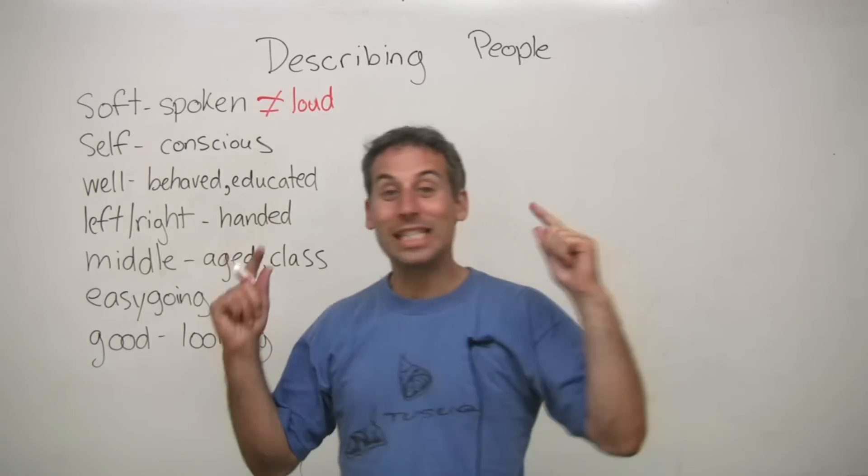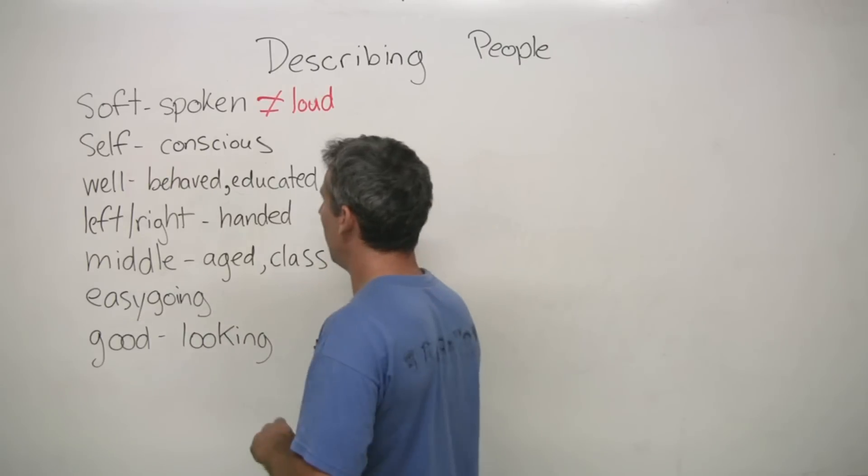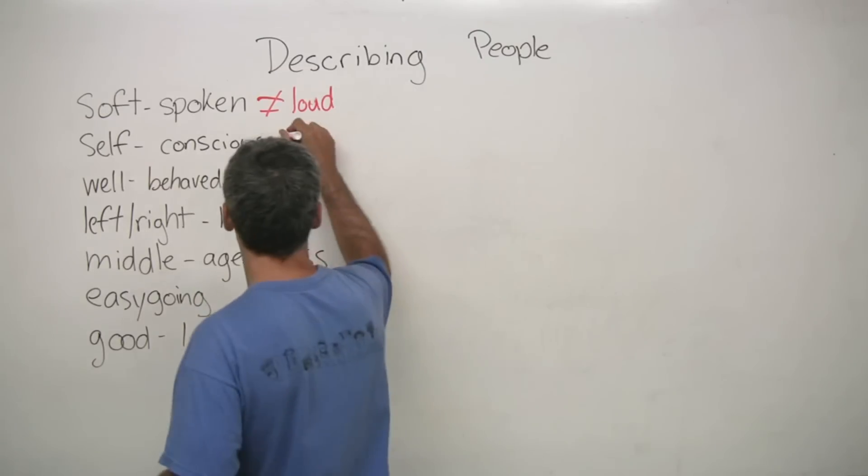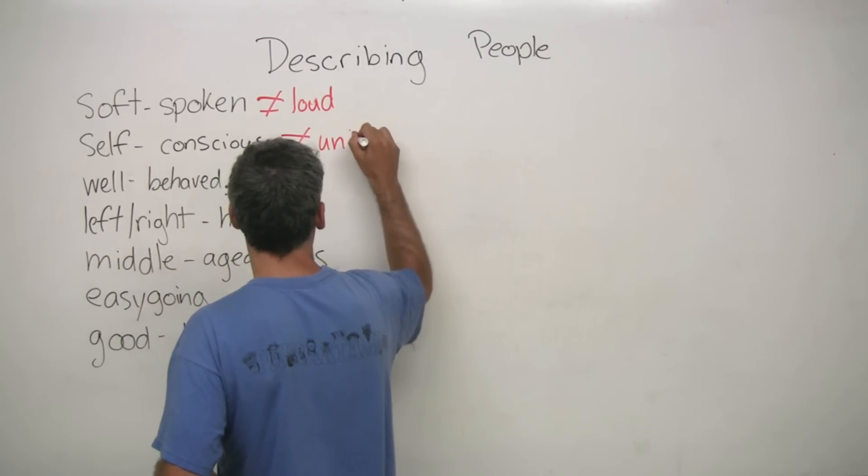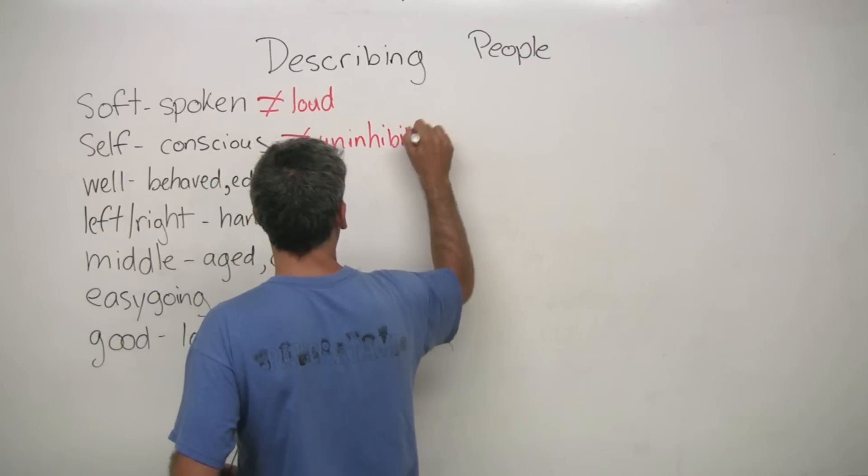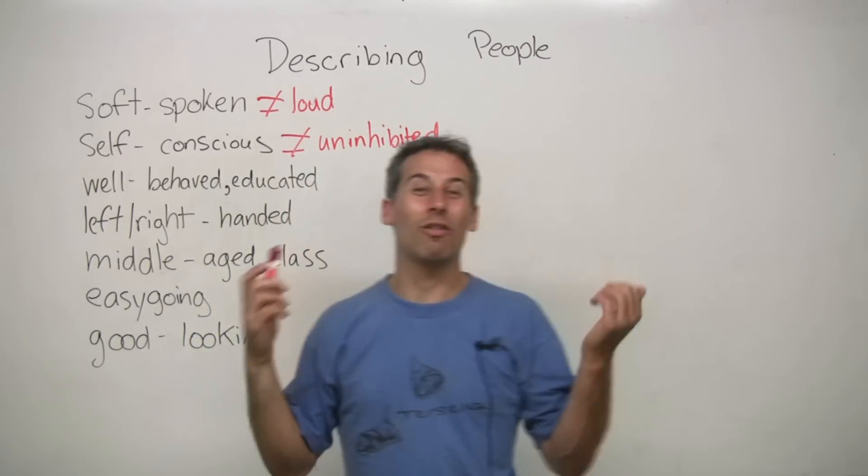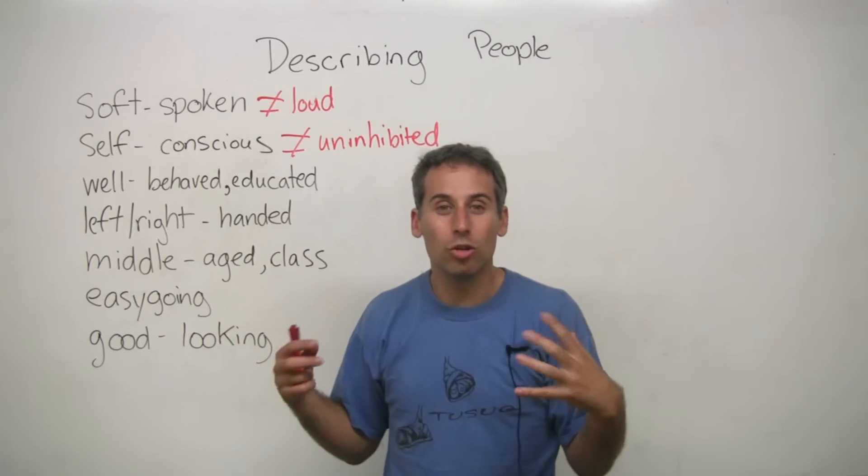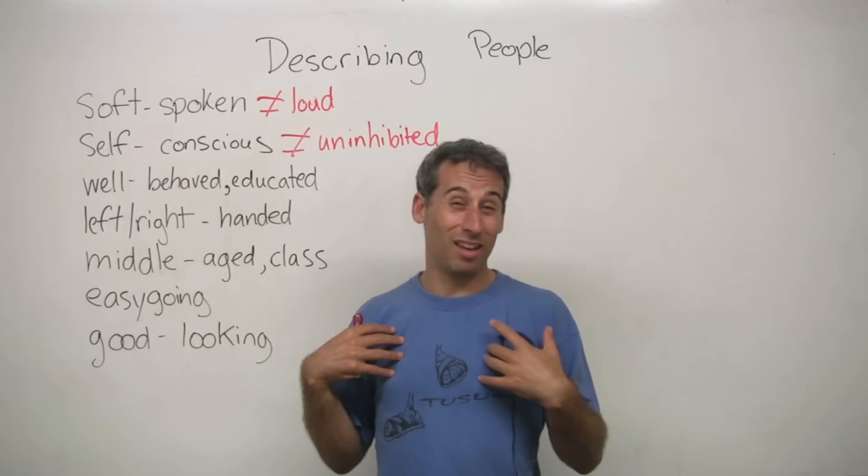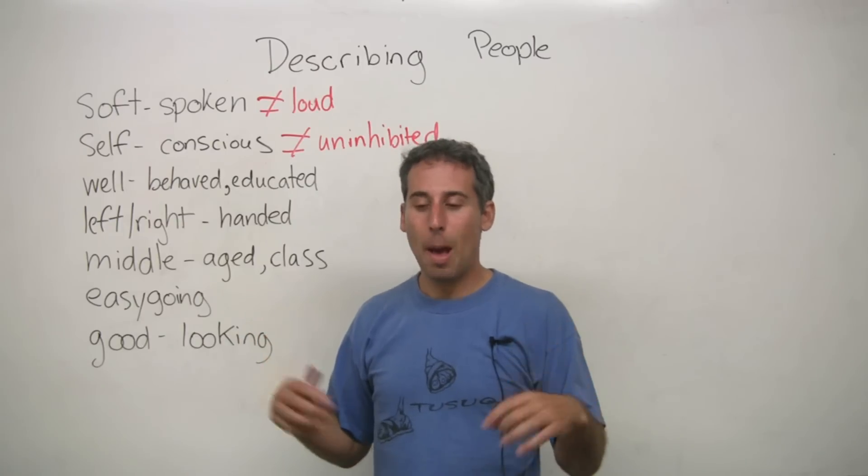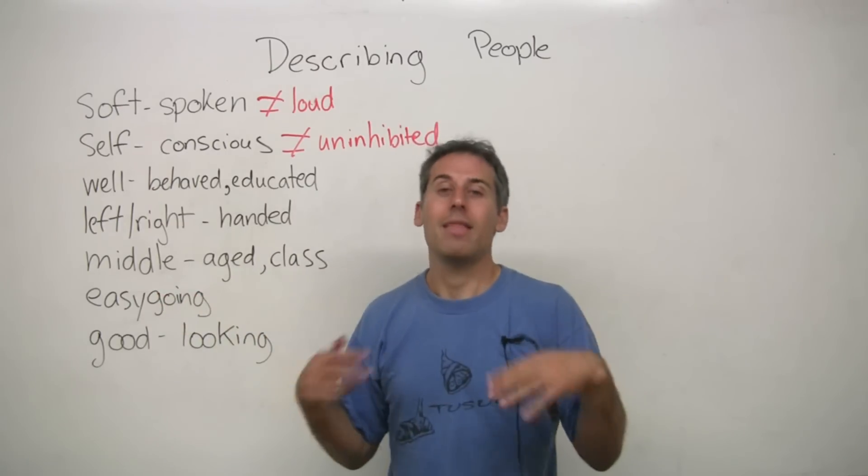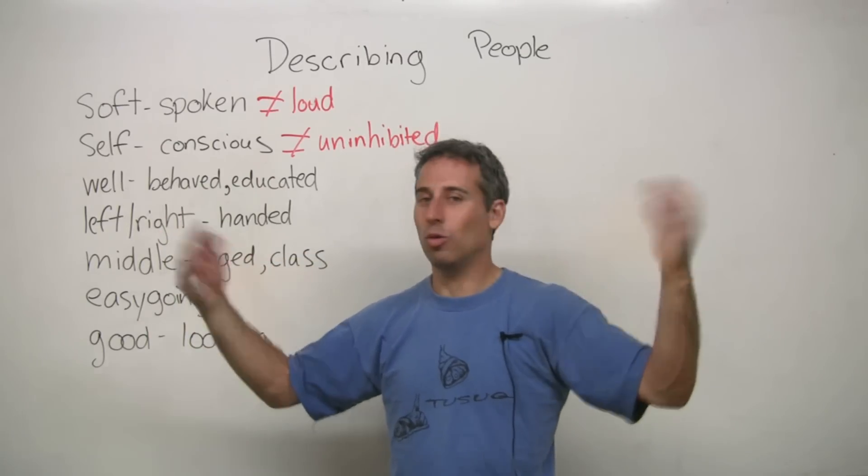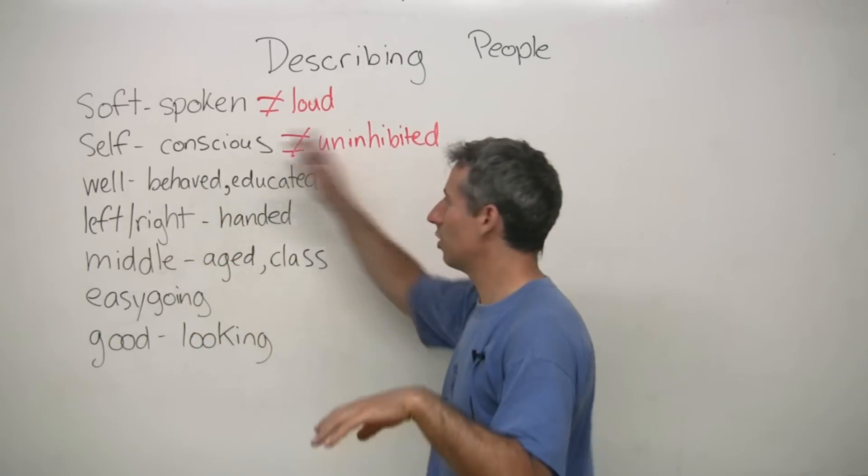Okay, the next one, self-conscious. The opposite of self-conscious would be uninhibited. Okay, so if you're self-conscious, then you are concerned or worried about what people think of you. That's being self-conscious. But if you're uninhibited, that means it doesn't matter. You feel free to be as you are, feeling uninhibited. Okay, so that's the opposite.